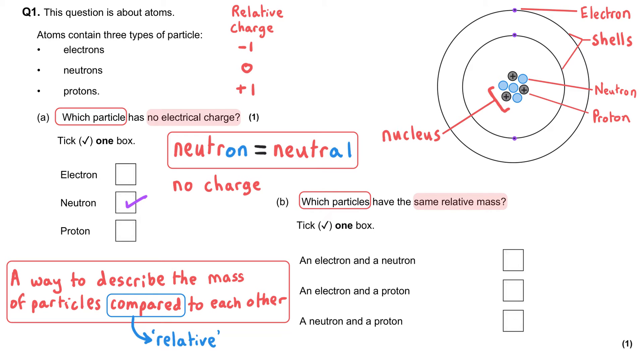And so you need to remember that the mass of an atom is found in its nucleus, which means it's contained within the neutrons and the protons. And neutrons and protons have got the same mass as each other. And so we say that their relative masses are one and one.